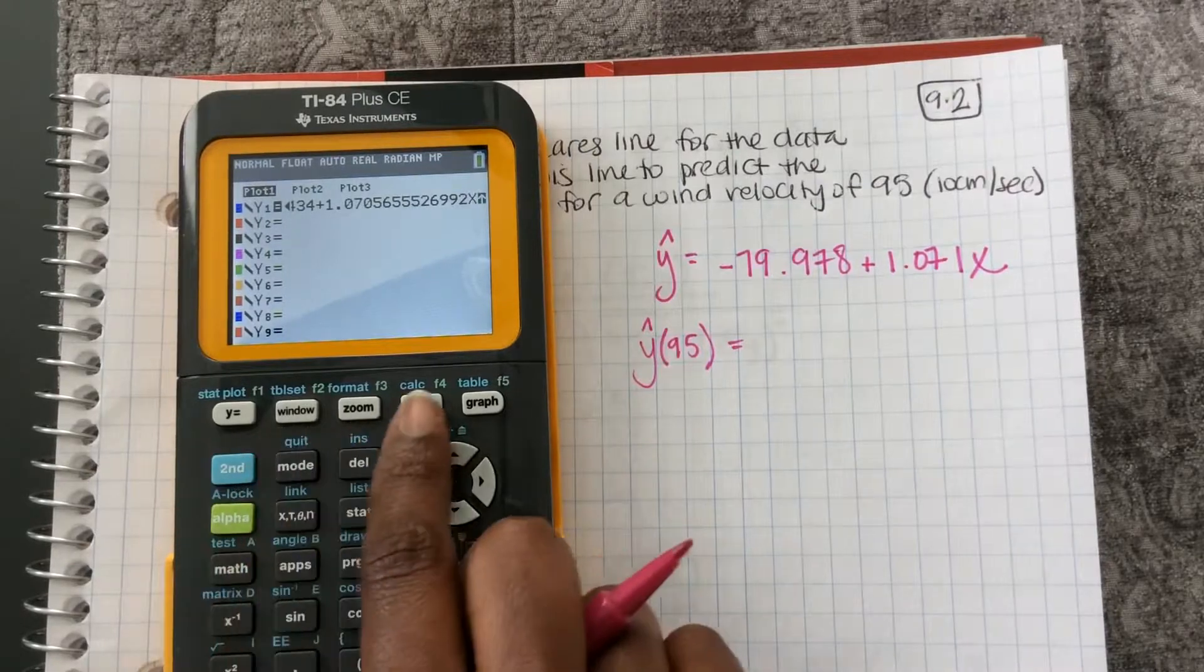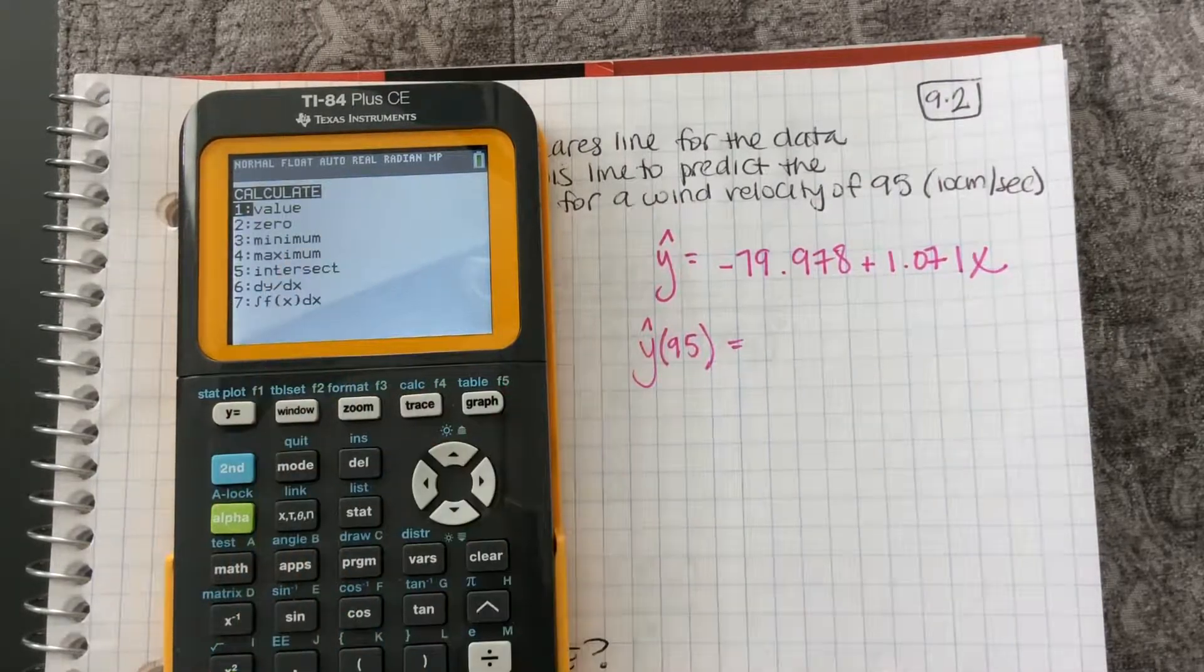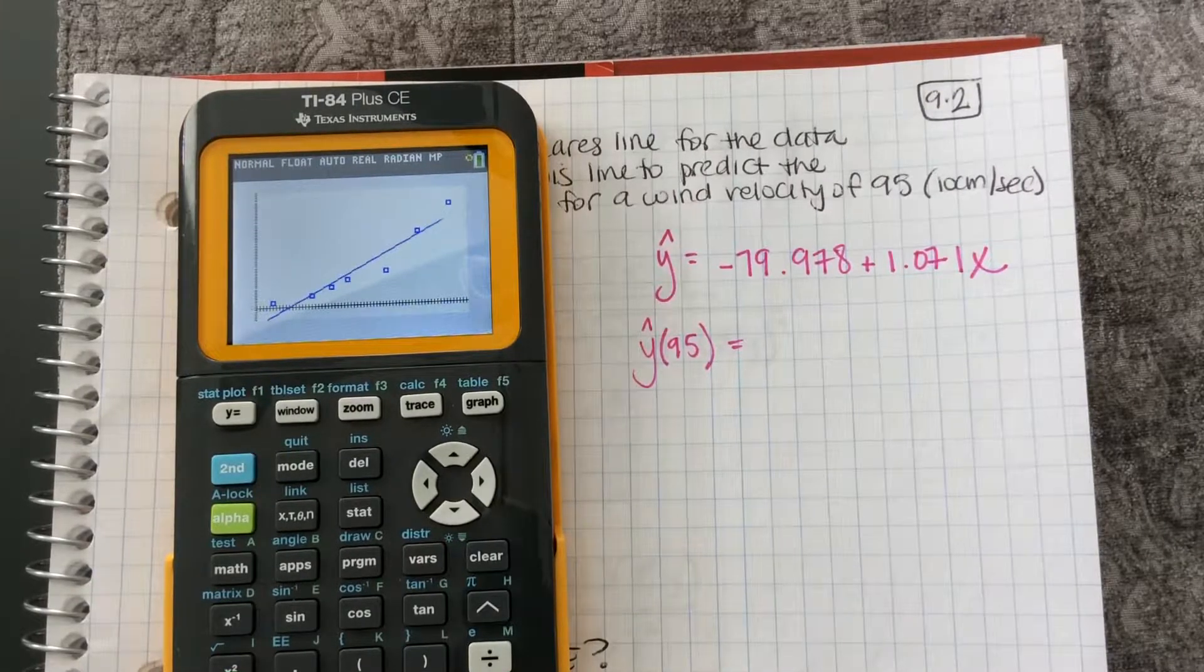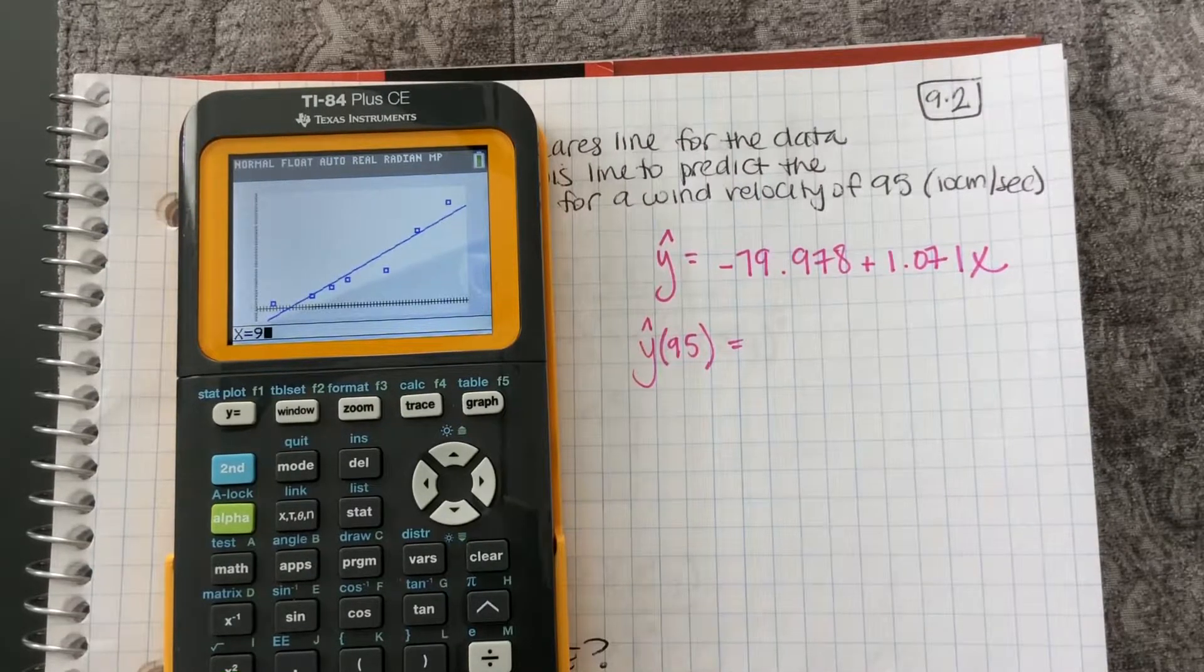So I'm going to press second, trace, which makes me calculate. I want to press number one, a value. So first it's going to look at my graph. There's my line. The x value I want to plug in is 95.